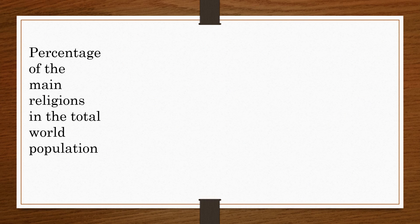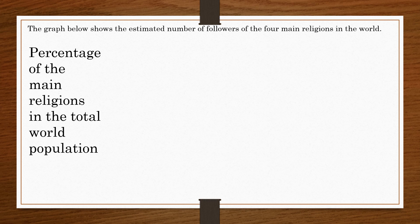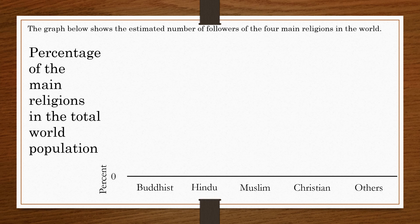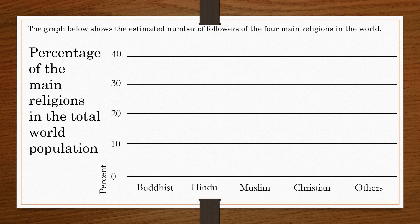Percentage of the main religions in the total world population. This graph will show you the estimated number of followers of the four main religions in the world. I am going to tell you the ratio of Buddhist, Hindu, Muslim, Christians, and others in percentages. It is presented from 0 to 40 percent.